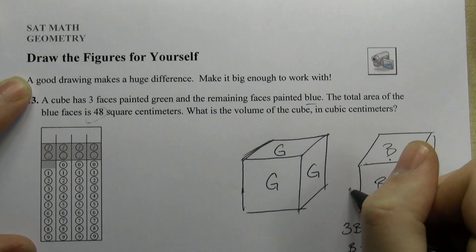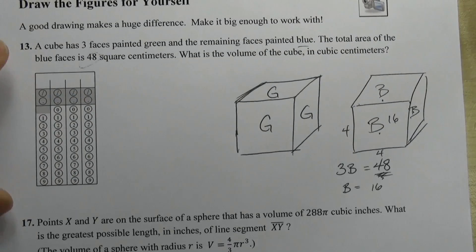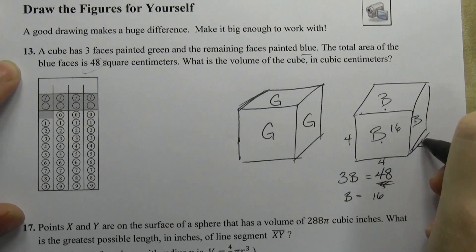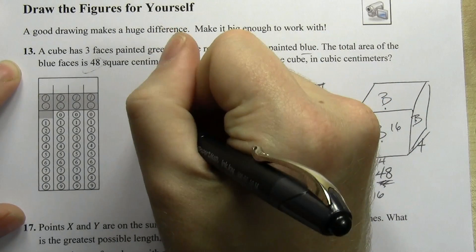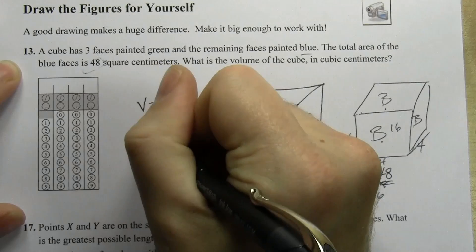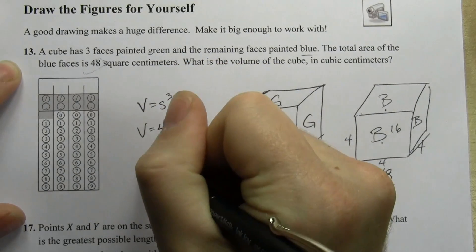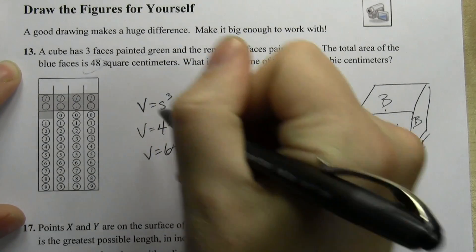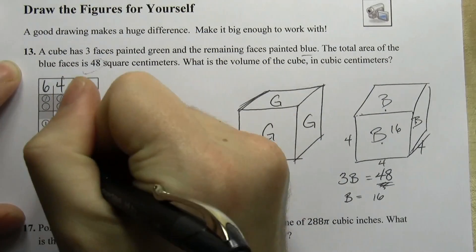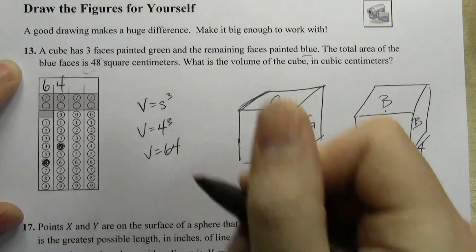If I know that the area of one blue face is 16, then I know this is 4 by 4, and I'm done. 4 by 4, and 4 cubed is the volume of the cube, so volume equals 4 cubed, volume is equal to 64, and you're done.